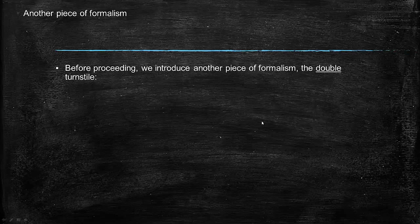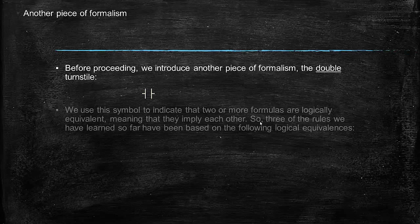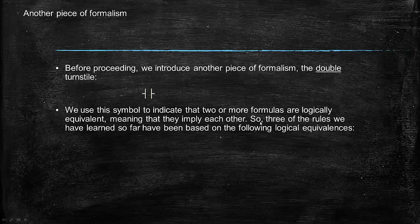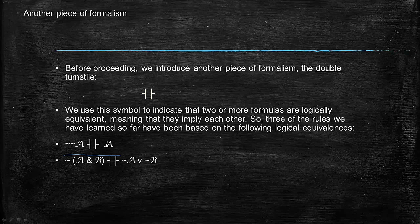Before moving on we'll introduce one little new symbol called the double turnstile. It just points in both directions, and its purpose is to indicate logical equivalence — when two or more formulas are logically equivalent. So this says: not-not-A is logically equivalent to A, which just means that you can derive A from not-not-A and vice versa.